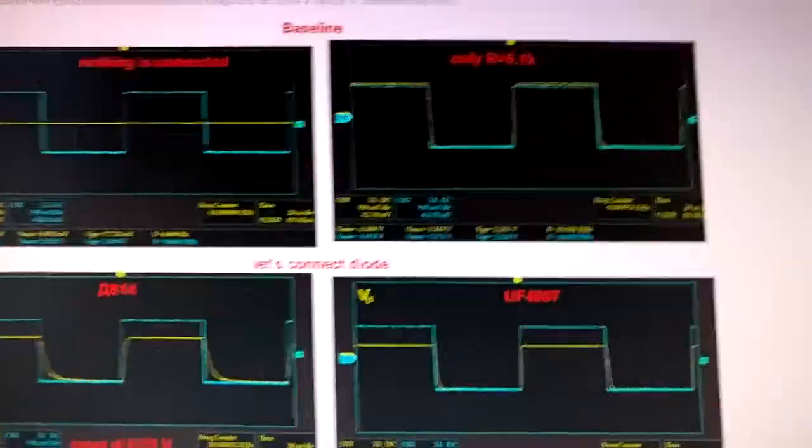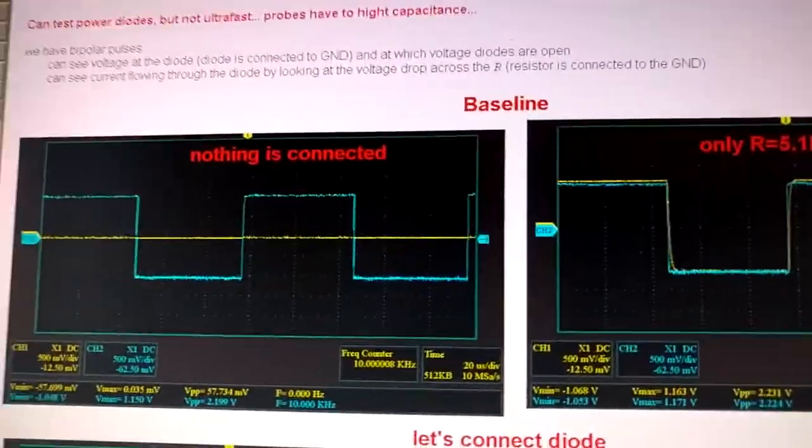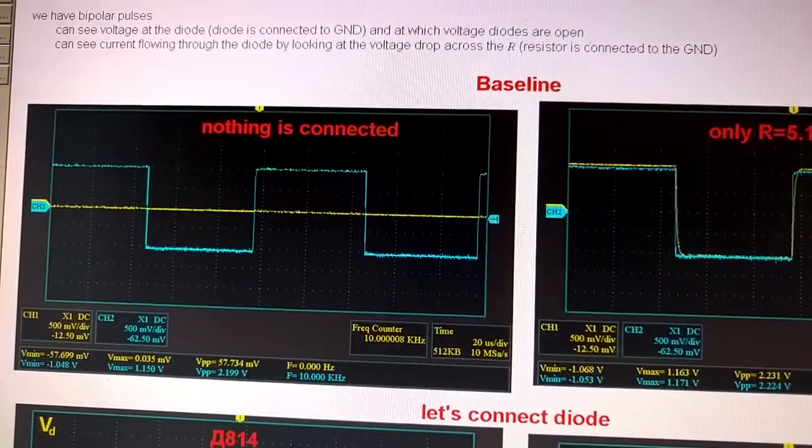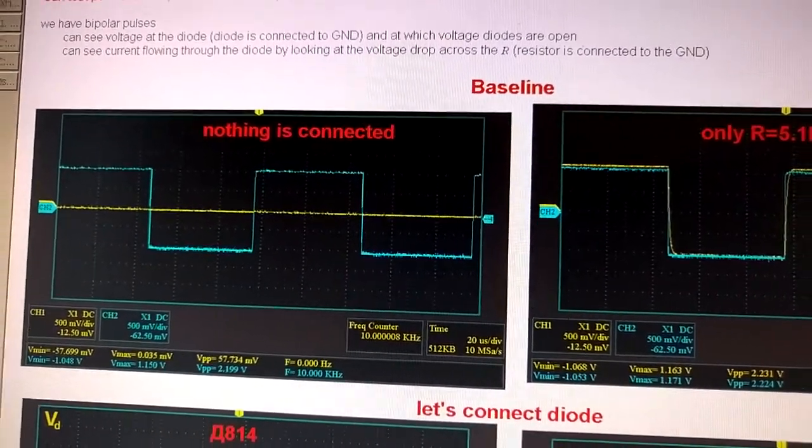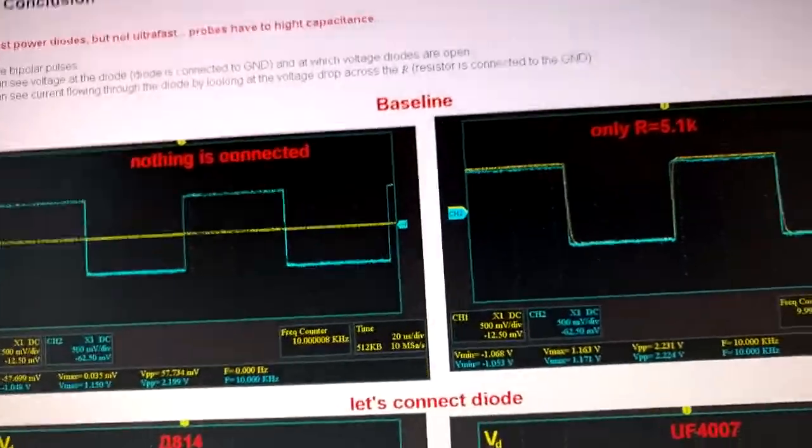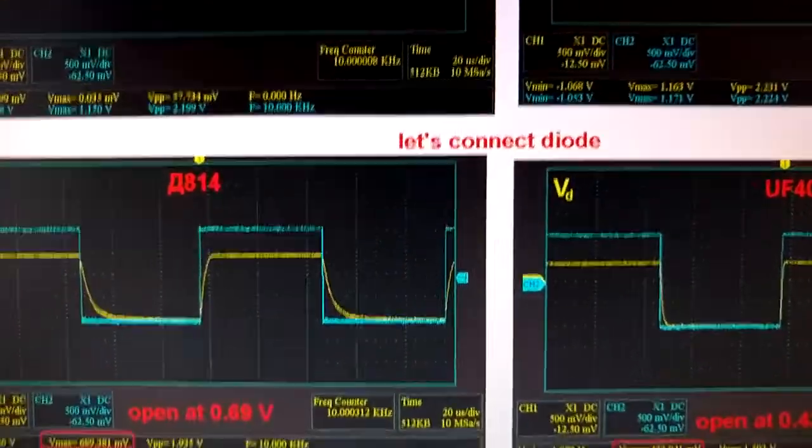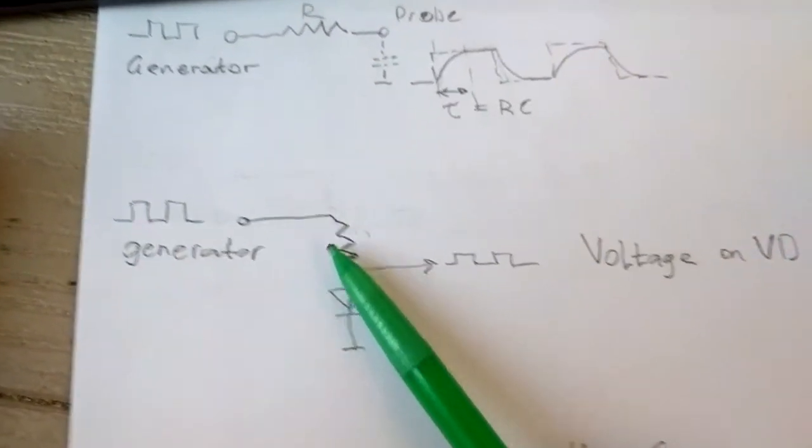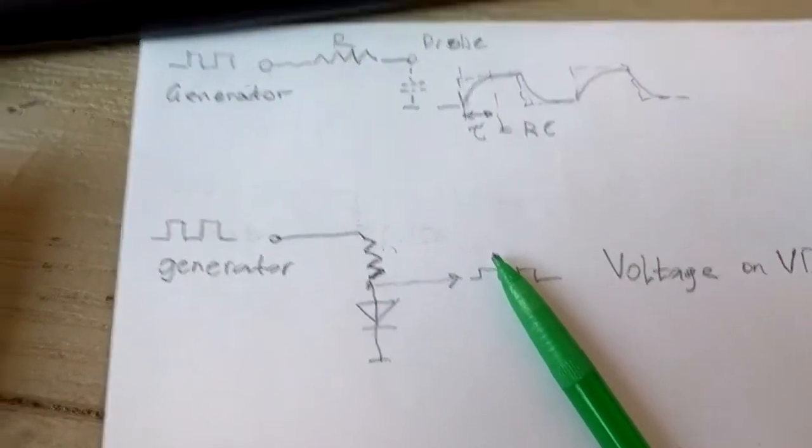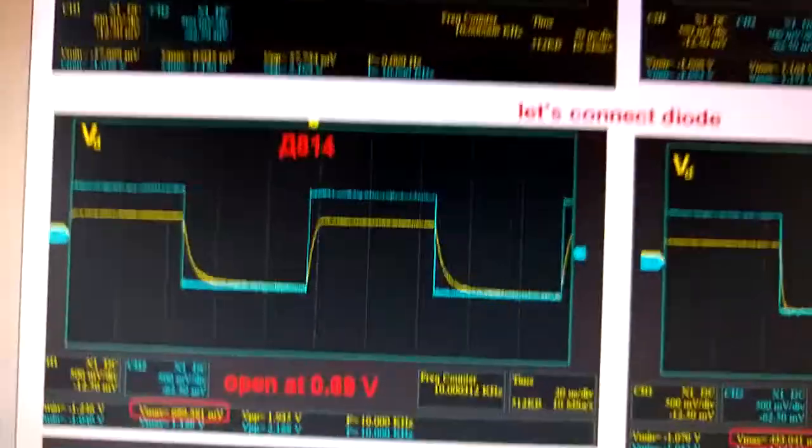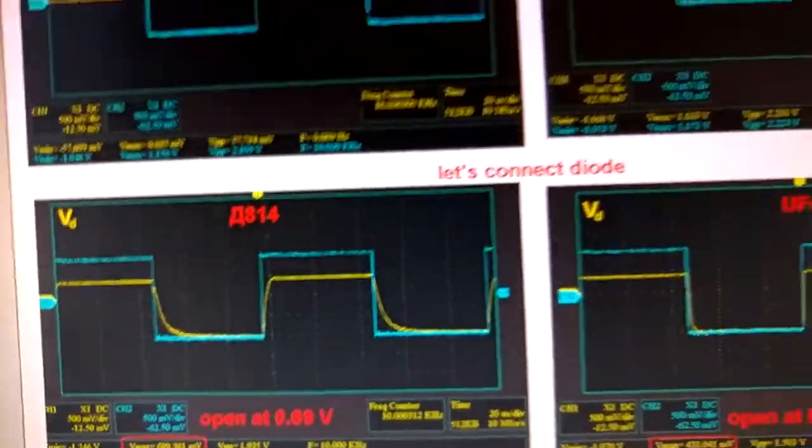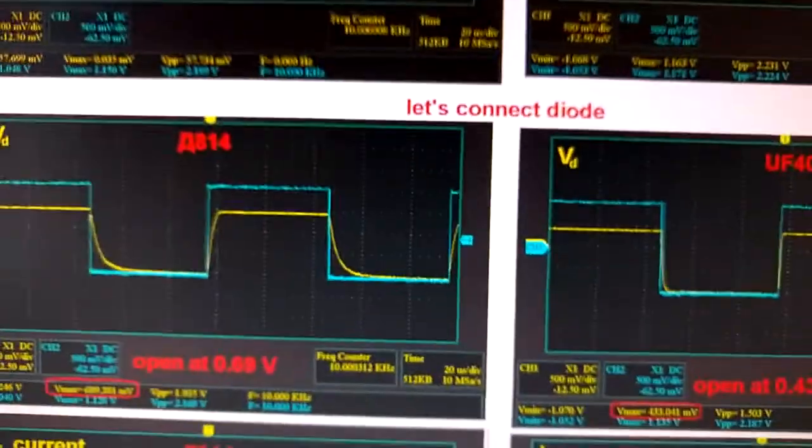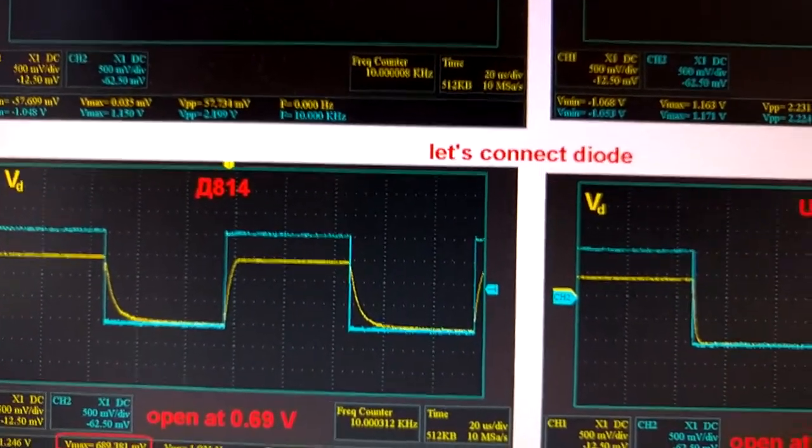So the first one, the first two graphs are the baseline. So I have bipolar pulses. This is plus and minus approximately one volt. And then I have the measurement of voltage across this diode. So I'm using this circuit. The diode goes to the ground and then I have the resistor. I'm looking at the voltage across this diode.